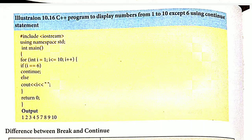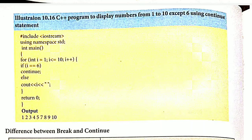Six plus one is seven, so i becomes 7 and the value 6 is never printed because the control was transferred to the beginning of the loop, leaving the print statement incomplete for i equals 6. In the output you can see 1, 2, 3, 4, 5 — then 6 is missing — and 7, 8, 9, 10 are printed. You can use the continue statement to skip any particular value in a loop.